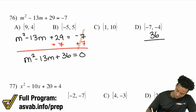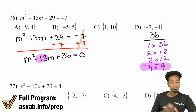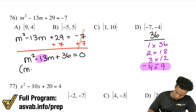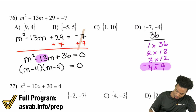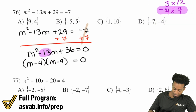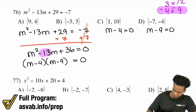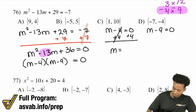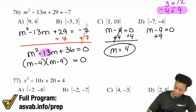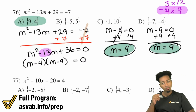Let's get back to the problem. The factors of 36: 1 times 36 — nope. 2 times 18 — nope. 3 times 12 — nope. 4 times 9 — yes! If we have negative 4 and negative 9, those add to negative 13, and they definitely work. So factor it out: we have M minus 4 times M minus 9 equals zero. Apply the zero product property: M minus 4 equals zero — add 4 to both sides — M equals 4. M minus 9 equals zero — add 9 to both sides — M equals 9. Our answers are 4 and 9.